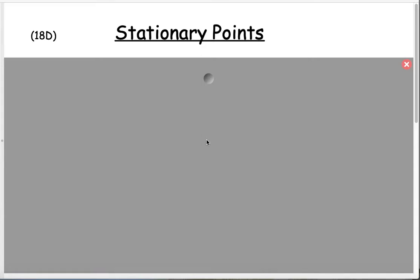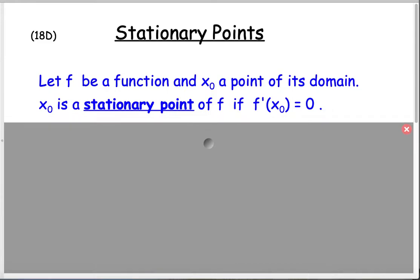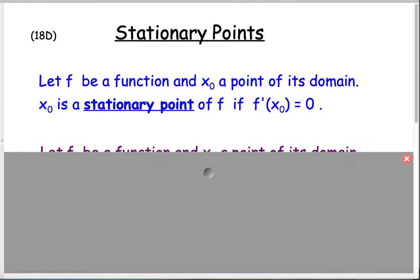Today we're going to talk about stationary points and how the derivative helps us get some information about the graphs of our functions. If f is a function and x sub zero is a point in its domain, then we say that x sub zero is a stationary point of f if f prime of x sub zero is equal to zero. So if the derivative equals zero, we have a stationary point.